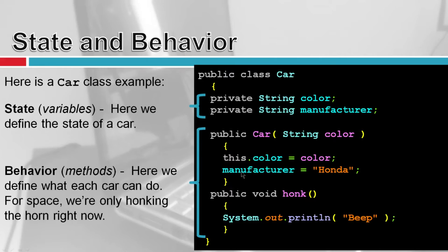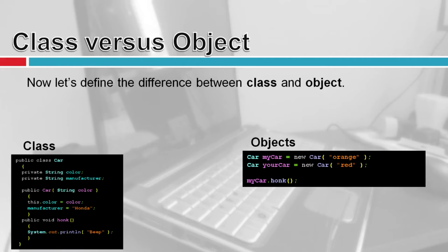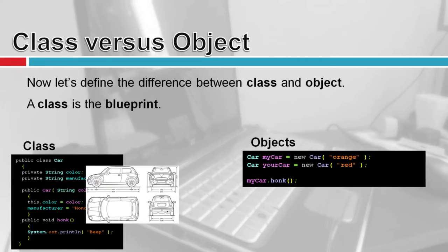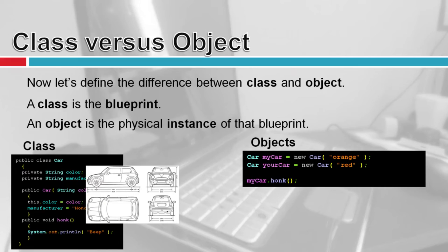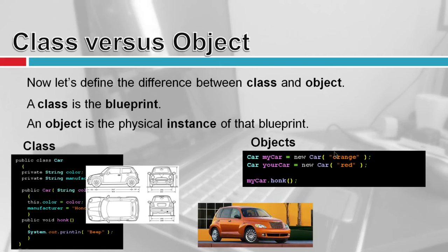I'm going to build a car, set these values, and when I call honk, I'm going to honk the horn. Now let's illustrate the difference between a class and an object. A class is a blueprint — I can't actually drive a blueprint. The object is a physical instance of that blueprint. When I encode these instructions and hit the first line, it's going to carve out space in memory and build me a car.